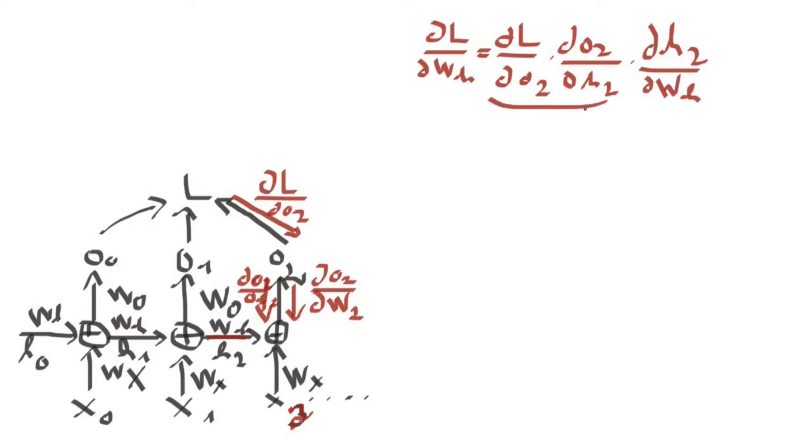These two terms here are really easy to compute and we are interested more in this one here. So remember that h2 equals wx·x1 plus wh·h1. So when we compute the derivative with respect to wh, we remove this term, this term does matter, and here we have the following derivative.